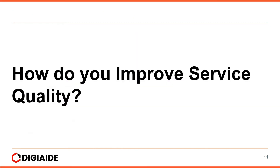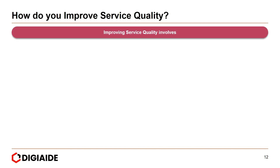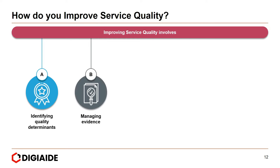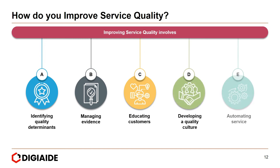How do you improve service quality? Improving service quality involves identifying quality determinants, managing evidence — specifically the physical evidence — educating customers, developing a quality culture, and automating service.